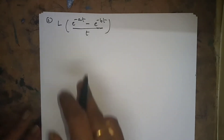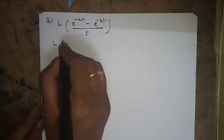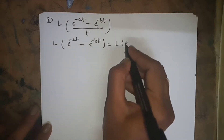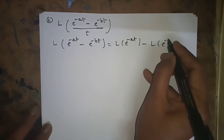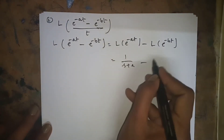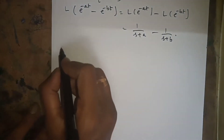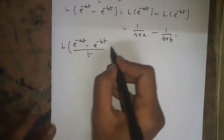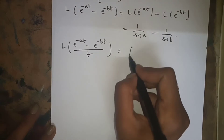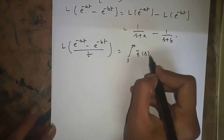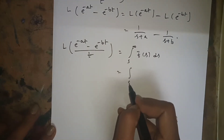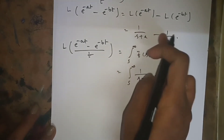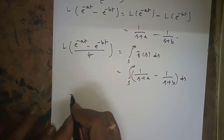The next problem is L{(e^(-at) - e^(-bt))/t}. First find the Laplace of the numerator: L{e^(-at) - e^(-bt)} = 1/(s+a) - 1/(s+b). Then L{(e^(-at) - e^(-bt))/t} = ∫_s^∞ [1/(s+a) - 1/(s+b)] ds.